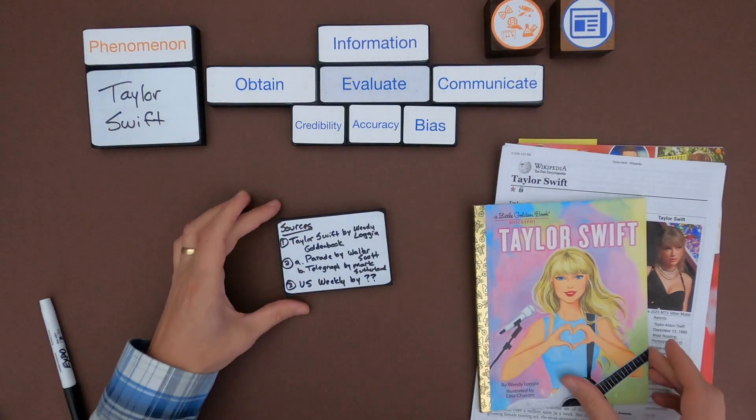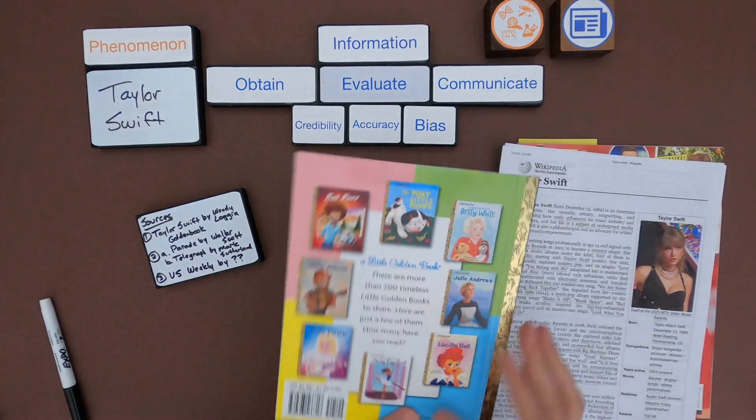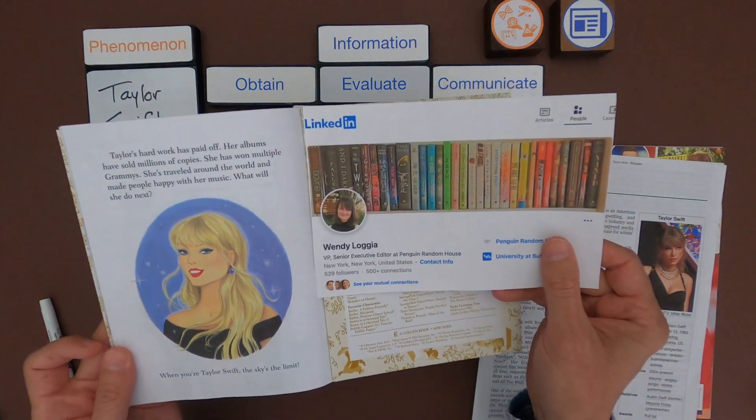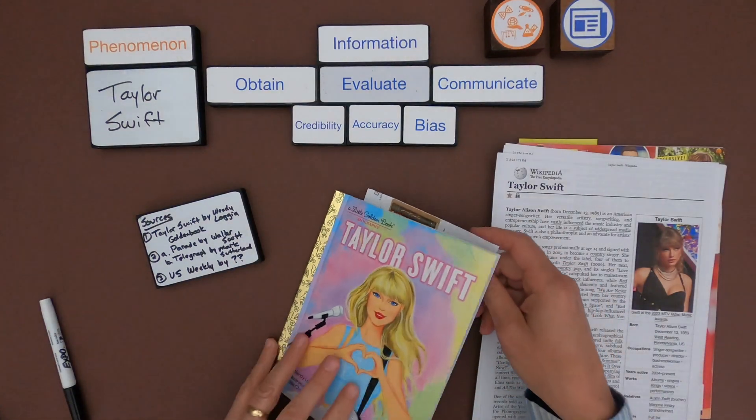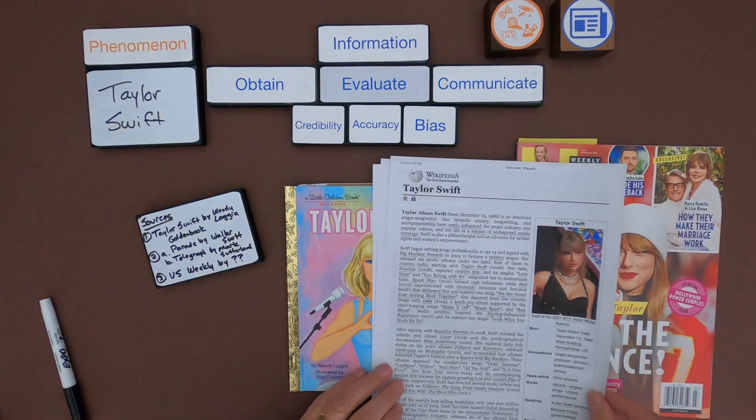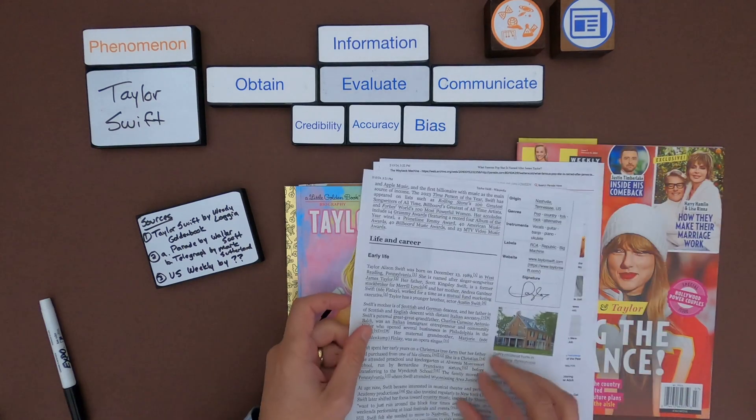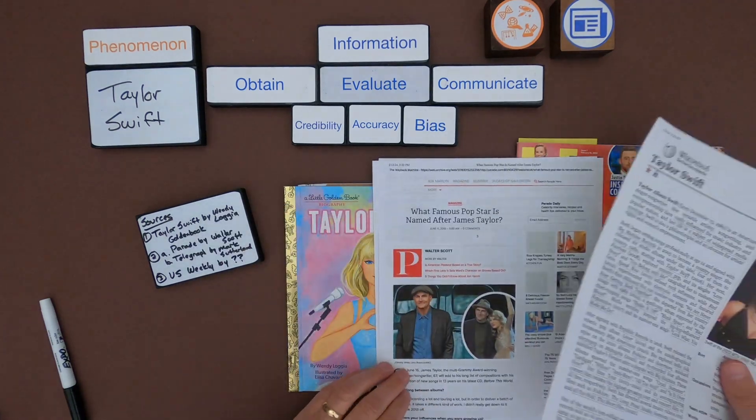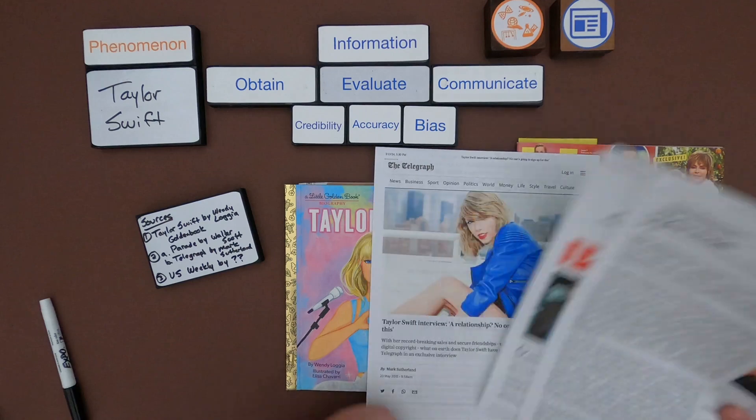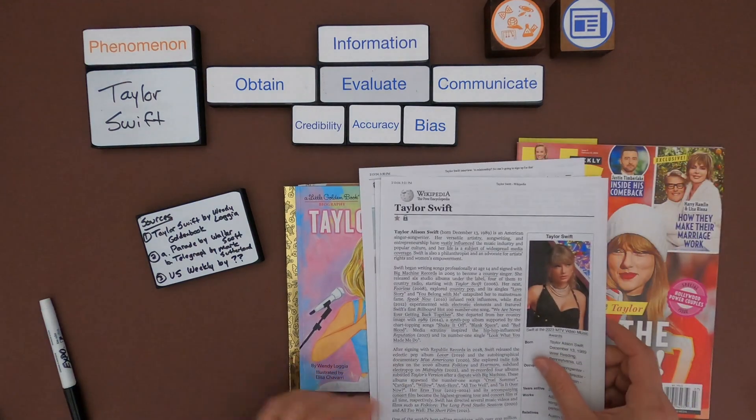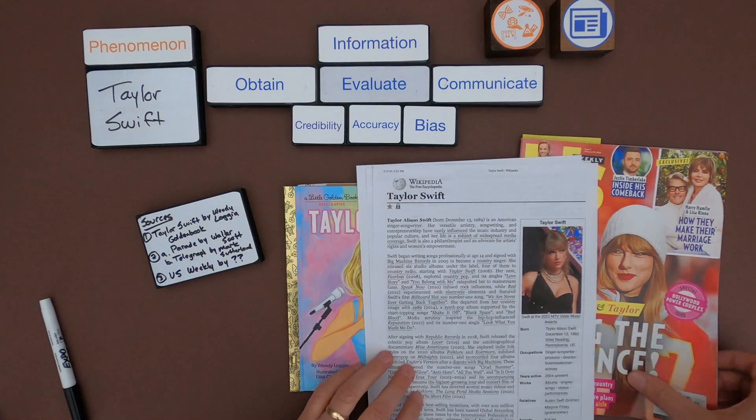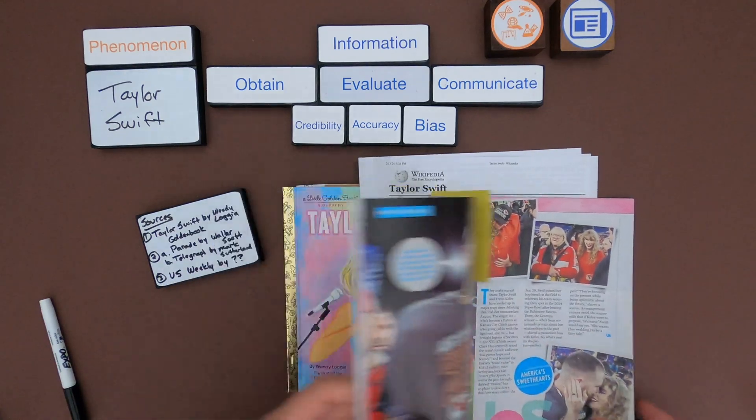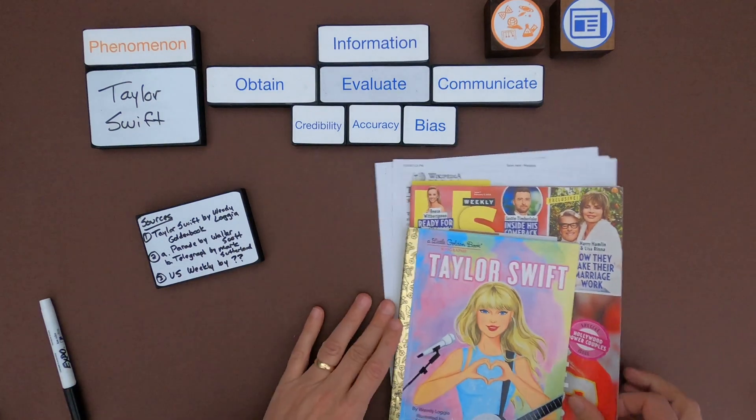Okay so the sources that I have, the first source I have is Taylor Swift. It's a book written by Wendy Loggia, and I printed out her LinkedIn profile. So she is executive editor at Penguin Random House. That's my first source. The next one is Wikipedia. Wikipedia will have information in it, but also there's going to be citations, so you can see the numbers. If you click on those, then it brings you to source material. So one was this Parade article by Walter Scott, and then the next one is a Taylor Swift interview by Mark Sutherland. So I'm marking those as 2A and 2B. And then the last is Us Weekly. And when I looked at this source material, there is no author. So I don't know who may or may not have written this.